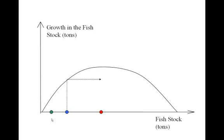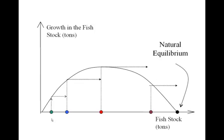That continues, but eventually you reach a carrying capacity — a point at which there's no more room for any more fish and the number of fish in the water body is maximized. That's what we call the carrying capacity of the fishery, and that's a natural equilibrium. If the fishery were left alone forever in this simple model, the stock would stay right there at that black dot at the natural equilibrium forever.